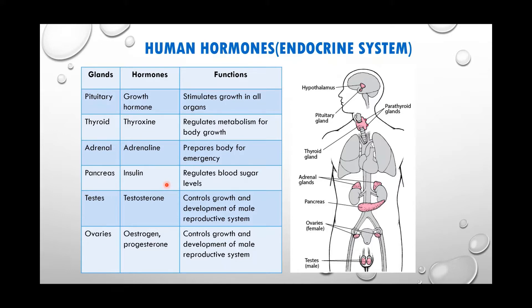The pancreas secretes insulin hormone to regulate blood sugar levels. The food we eat contains carbohydrates with a lot of glucose, which should be broken down to simpler molecules to be absorbed by the blood — this is done by insulin. If insulin is secreted in less than the specific amount, blood sugars are not broken down and stay in the blood, causing complications. These people are called diabetic, and diabetic patients are given insulin to maintain the required level.